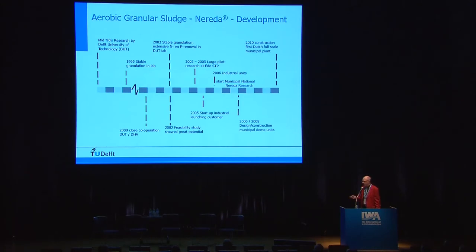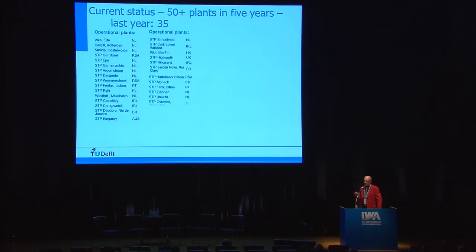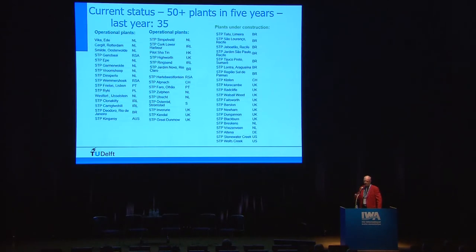Briefly on aerobic granular sludge: it takes time to develop a product. We started in 1995; the first full-scale municipal installation started construction in 2010 — 15 years later — and was fully operational one or two years after that. But after that it grew relatively quickly: in the last five years, there are about 50 plants in operation on almost all continents, including the US. These plants need only about 25–30% of the space of a regular municipal treatment plant, and investment costs are in general about 20% lower than existing plants. So there is a clear advantage for the introduction, and then adoption goes relatively quickly.